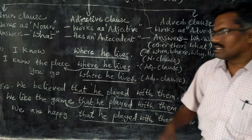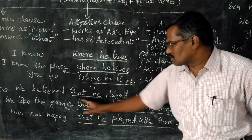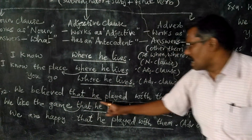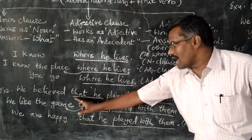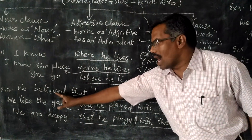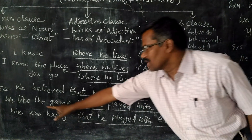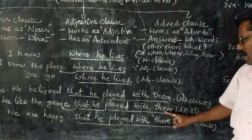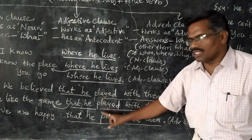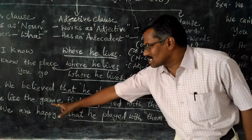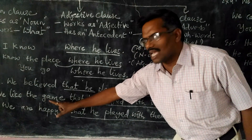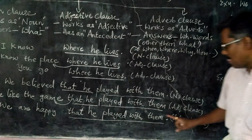Example number two. 'We believe that he played with them' — the clause 'that he played with them' is a noun clause because it answers the question 'what': we believe what? Second: 'We like the game that he played with them.' Here, 'that he played with them' has an antecedent before it — 'game.' This clause describes that noun, so it is called adjective clause.